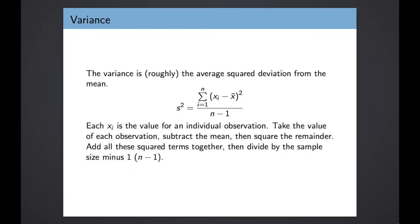Understanding that dispersions around a mean can vary quite a bit depending on your distribution — how might we quantify that concept? One really common way of doing this is by calculating the variance of a distribution. The equation for the variance gives you roughly the average squared deviation from the mean.